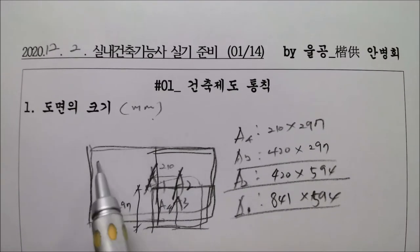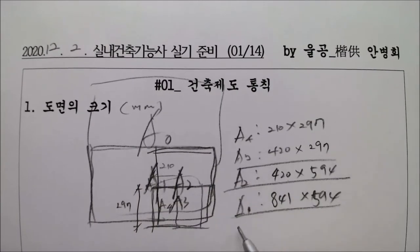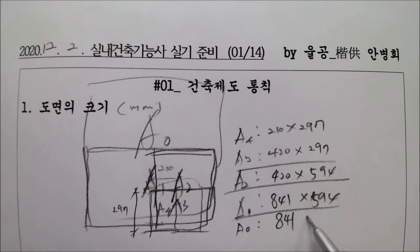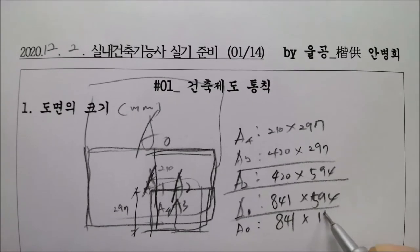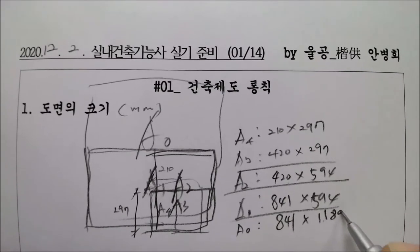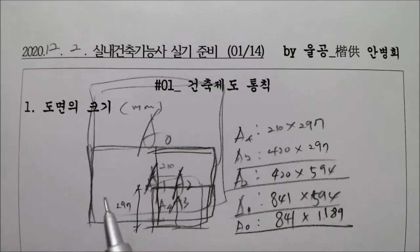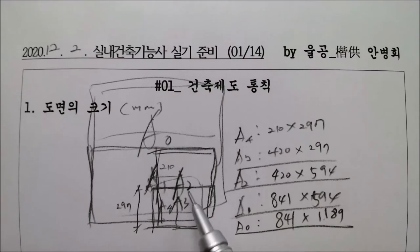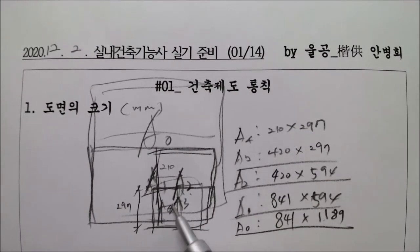A1에서 한 장이 더 붙으면 A0가 됩니다. A0는 얼마일까요? 841은 살려두고 594가 합쳐지면 1188이지만, 소수점 때문에 1189가 됩니다. A0의 반은 A1, 반은 A2, 반은 A3, 반은 A4. 쪼개면 A5, A6 이렇게 됩니다.